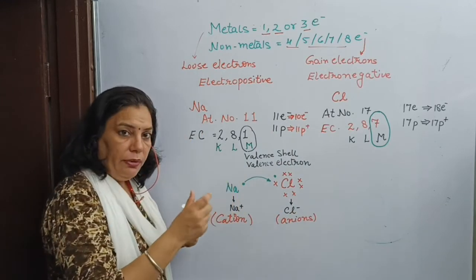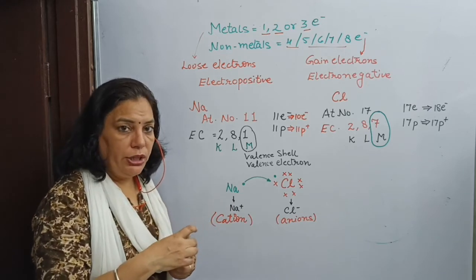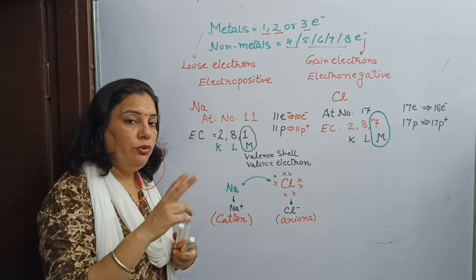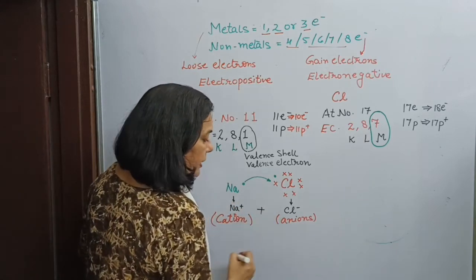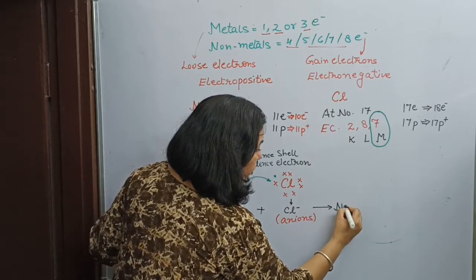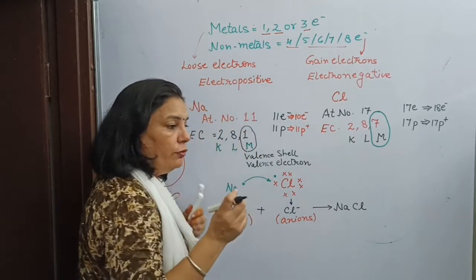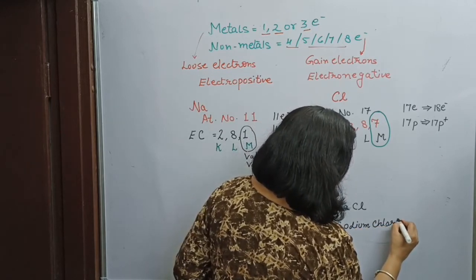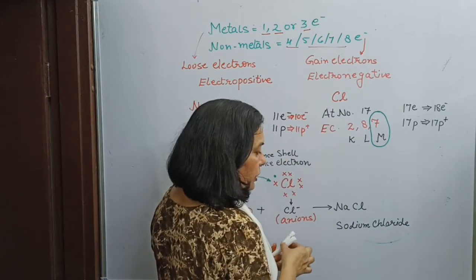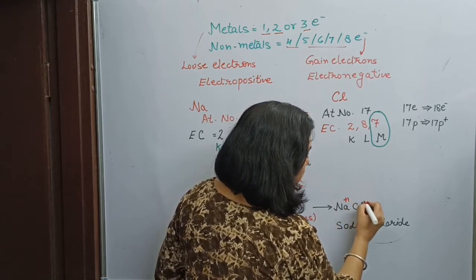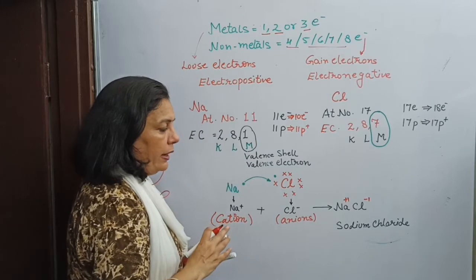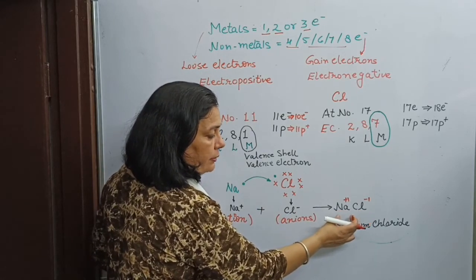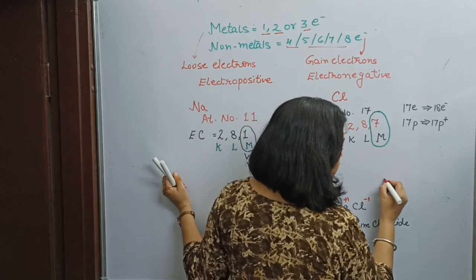Na+ and Cl- will react with each other — there is a force of attraction developed between them because both carry opposite charges, and there is a force of attraction between opposite charges. So Na+ and Cl- react with each other, and there is a formation of NaCl. NaCl is the compound Sodium Chloride. In one molecule of Sodium Chloride, sodium has a +1 charge and chlorine has a -1 charge. The force of attraction — the nature of the bond formed between Na+ and Cl- — is called an electrovalent bond.